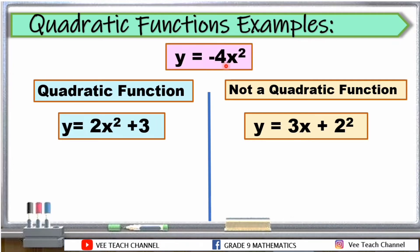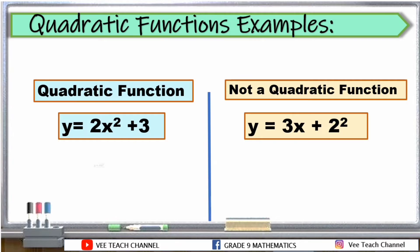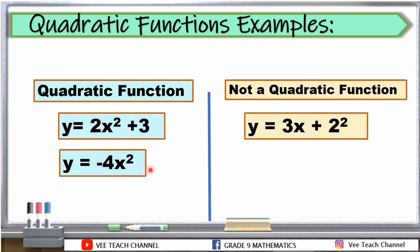Next, y is equal to negative 4x squared. Quadratic function or not? Yes, you're right. This is a quadratic function. Y is equal to negative 4x squared — pwede ba yun? Mag-isa lang siya? Yes, we can still consider this as a quadratic function because ang highest exponent ng variable natin dito is 2. Kaya, quadratic function pa rin siya.